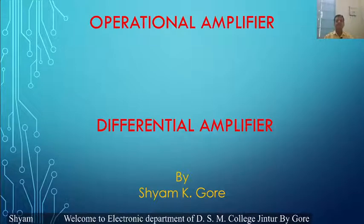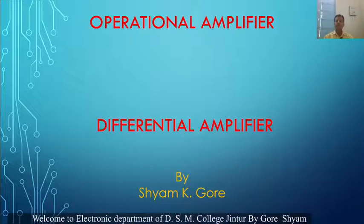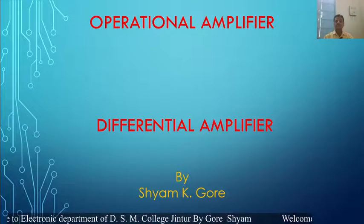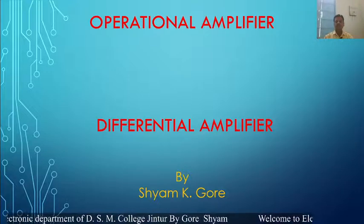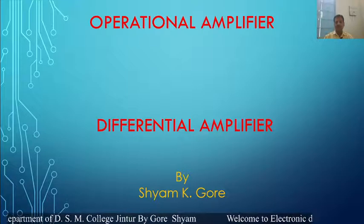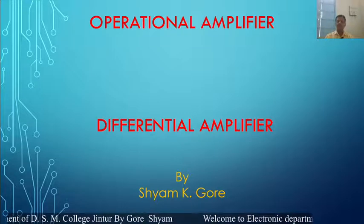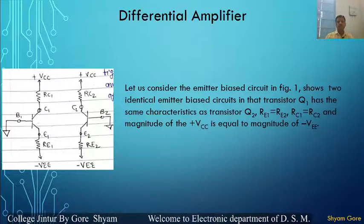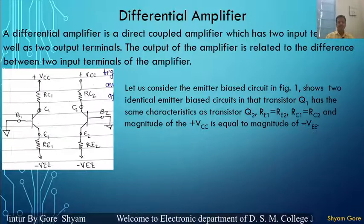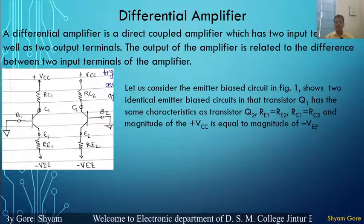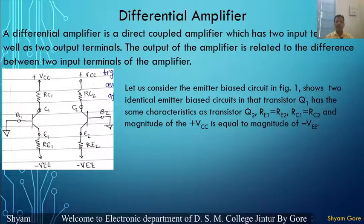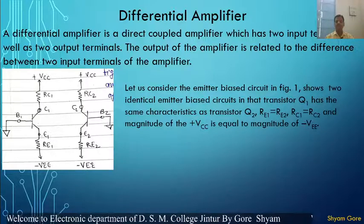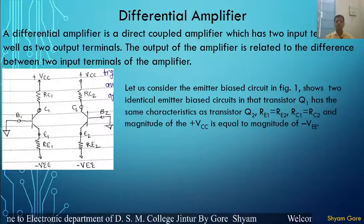The operational amplifier has different stages, and the basic building block of the operational amplifier is the differential amplifier. So let us look at the differential amplifier. The differential amplifier is a direct-coupled amplifier which has two input terminals as well as two output terminals. The output is related to the difference between the two input terminals.